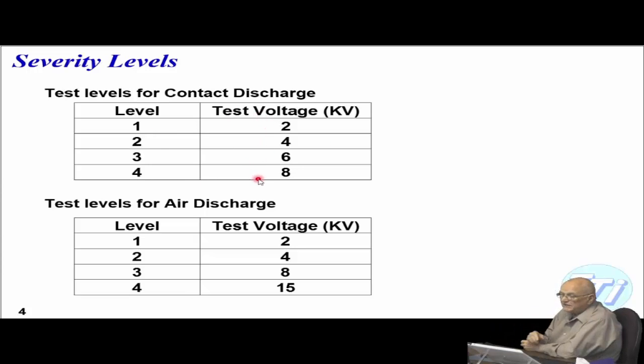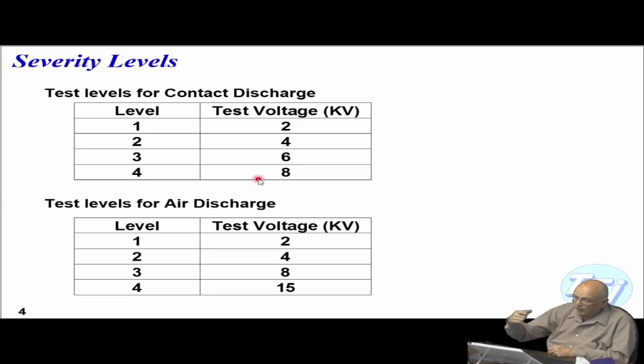We're talking about contact discharge. Contact discharge is where you actually have the static gun, you walk up to it or pass it up to a perpendicular handle and actually touch the equipment. The thing about it is you don't just touch it in one spot, you touch it all over the place.